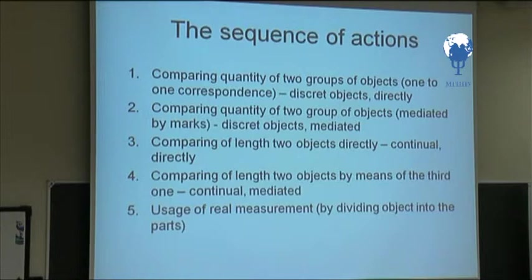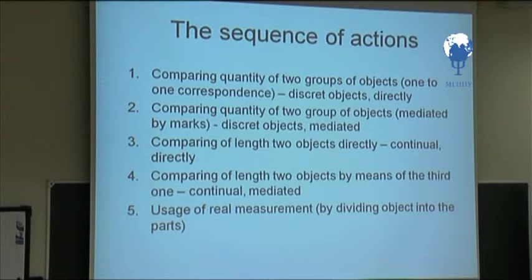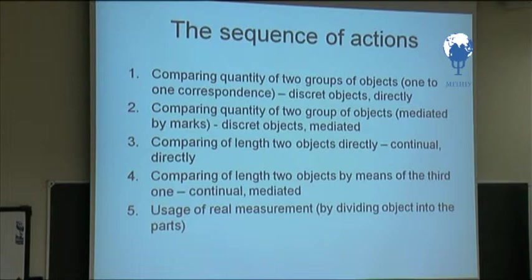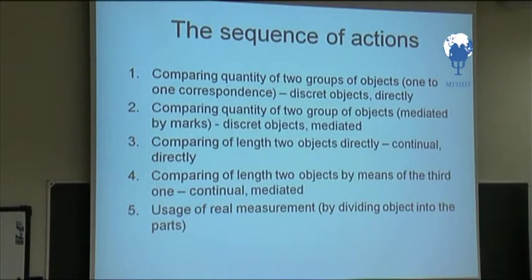First, comparing quantity of two groups of objects by one-to-one correspondence — discrete objects directly. Second, comparing quantity of two groups of objects mediated by marks — discrete objects mediated. Comparing the length of two objects by means of a third one — continuous mediated. And using real measurement by dividing the object into parts.